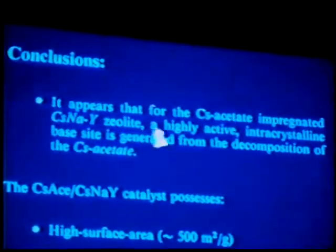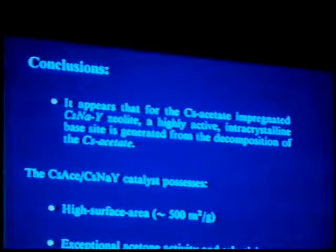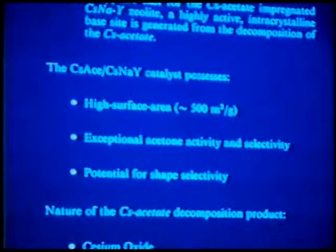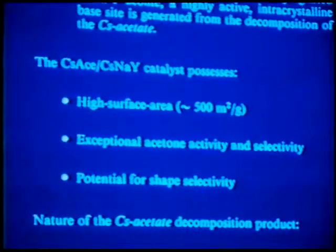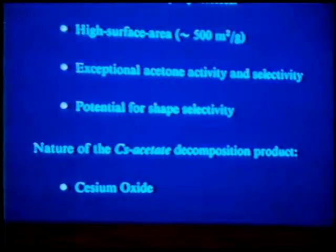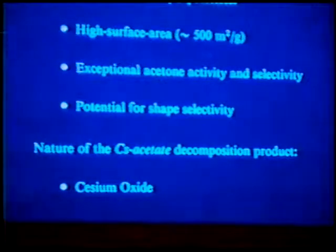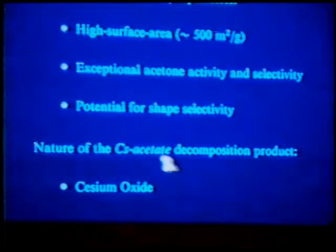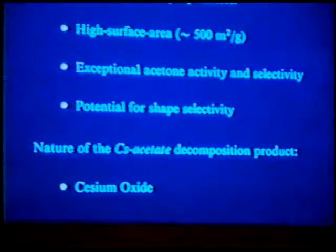To summarize the earlier work: for the cesium acetate impregnated cesium-Y zeolite, we have a highly active intracrystalline base site generated from the decomposition of the cesium acetate. The cesium acetate-Y possesses a high surface area — around 500 m²/g — and exceptional activity and selectivity relative to magnesium oxide. From the XPS data, we have potential for shape selectivity. Not so much for the faujasite large pore zeolite, but perhaps applying this technology to smaller pore zeolites. The nature of the acetate decomposition product appears to be a cesium oxide.